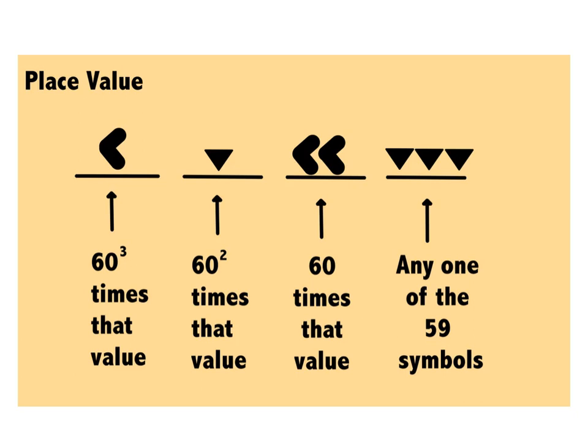Using the two different shapes, you can make any one of the 59 different symbols that we saw in the table before. So those symbols will be multiplied by the place value. So this first spot here is the ones place. It just stands for the number 1 through 59.